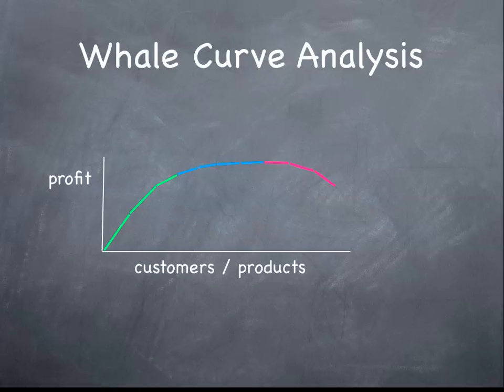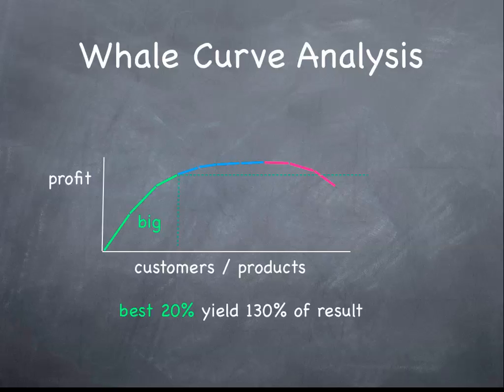What are these whale curves actually telling us? One of the insights is that a small percentage of your best customers contributes a disproportionate amount to the final result. This is similar to the Pareto distribution, only that in this case the top 20% can actually yield more than 100% of the final result — say 130% in this case.